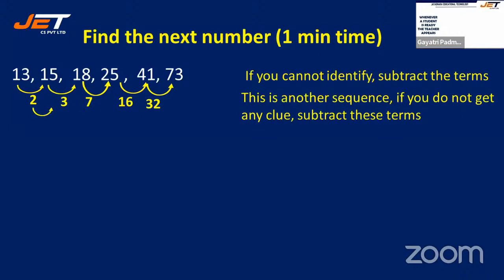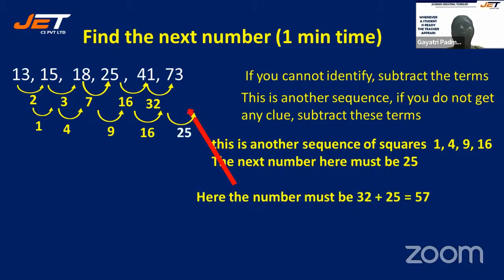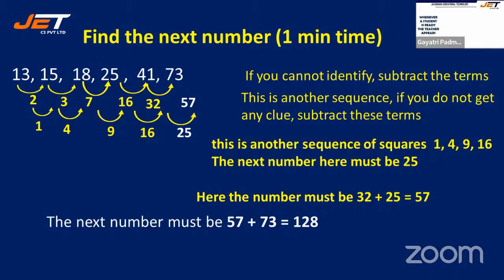Subtracting those differences again: 3−2=1, 7−3=4, 16−7=9 (wait: actually the second differences are 1, 4, 9, 16 — these are perfect squares: 1², 2², 3², 4²). So the next second difference is 5²=25. Add 32+25=57, then 73+57=128 is the answer.